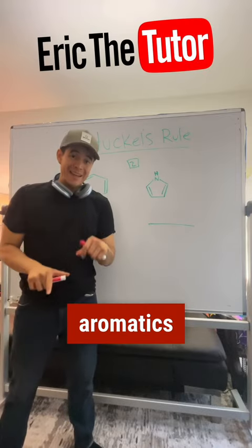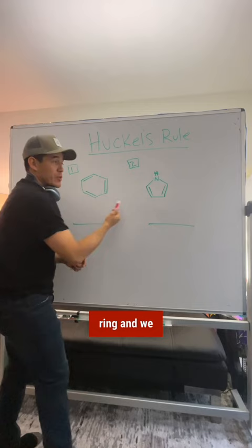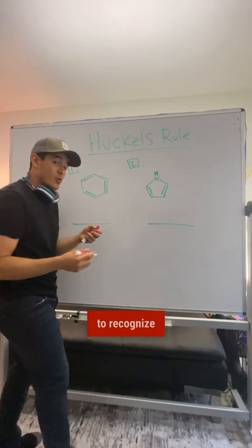Let's do aromatics Huckel's rule in 60 seconds or less. So we have a benzene ring and we have another cycloalkane over here. So what we need to do first off, we need to recognize that everything is conjugated. That's the first thing we need to see.